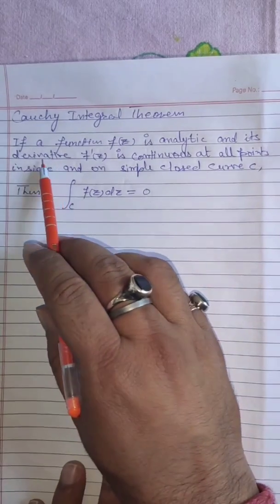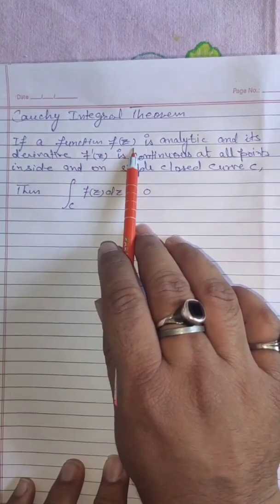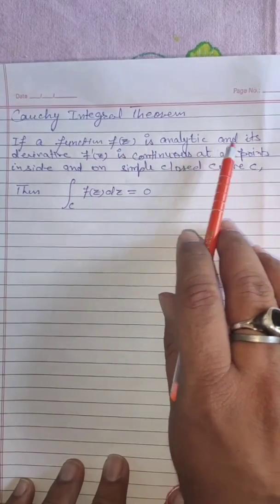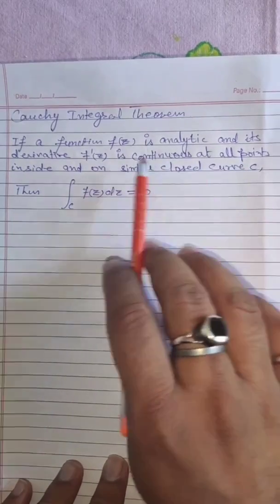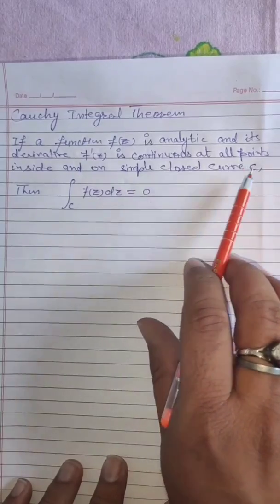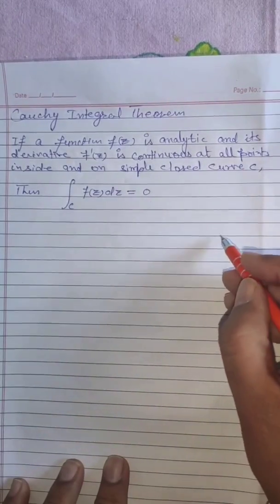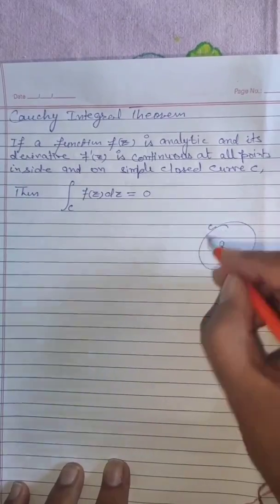Now, the statement of Cauchy Integral Theorem is: if a function f(z) is analytic and its derivative f'(z) is continuous at all points inside and on a simple closed curve, here we make a simple closed curve, here r is the region and c is the curve.